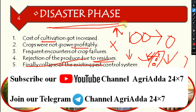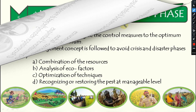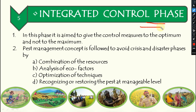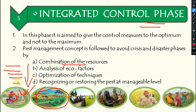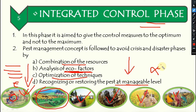The fifth phase is the integrated control phase. Here, a combination of resources is used — natural resources, integrated farming systems, and multiple methods to reduce pest populations, with chemical control as the last option. Farmers achieved higher yields, lower input costs, and more profit. Eco-stable methods are used, and the goal is pest reduction to a manageable level, not pest elimination, because predators must also be preserved within the ecosystem.